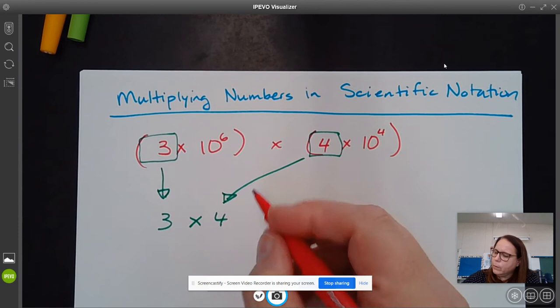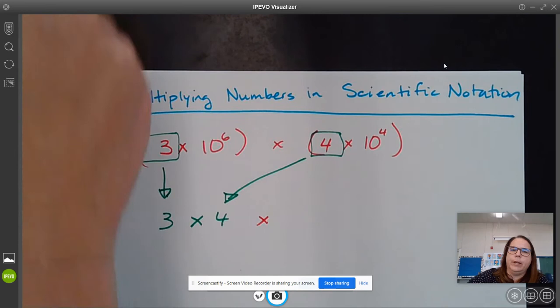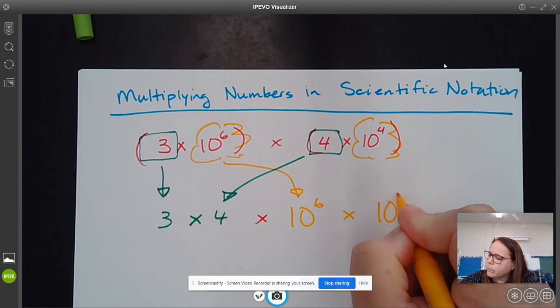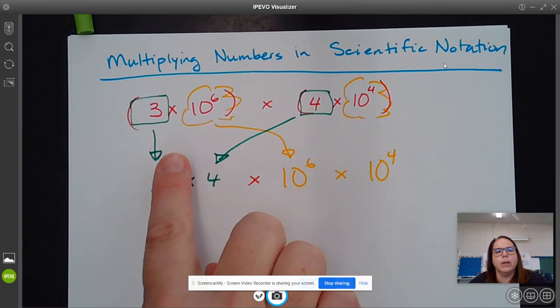So remember, it's just all multiplication, but now we can multiply our powers of 10. So now we're just going to take the powers of 10 and multiply them in the back. And it is the commutative property of multiplication that lets us multiply these in whatever order we want.